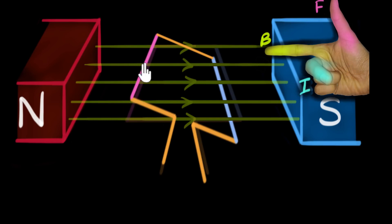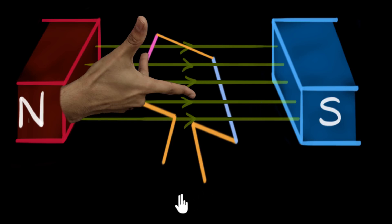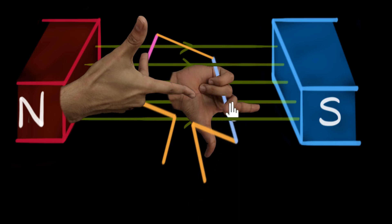Let's apply the right-hand rule to the pink wire going upwards and the blue wire moving downwards. For the pink wire going up, the thumb points upward and the forefinger points to the right — the middle finger points inwards, so the current in the pink wire is inwards. For the blue wire moving downward, the thumb points down and the forefinger still points to the right — the middle finger points out of the screen, so the current in the blue wire comes out of the screen.